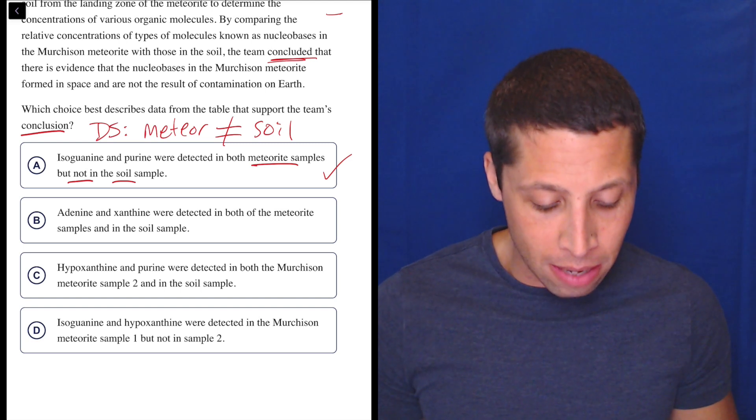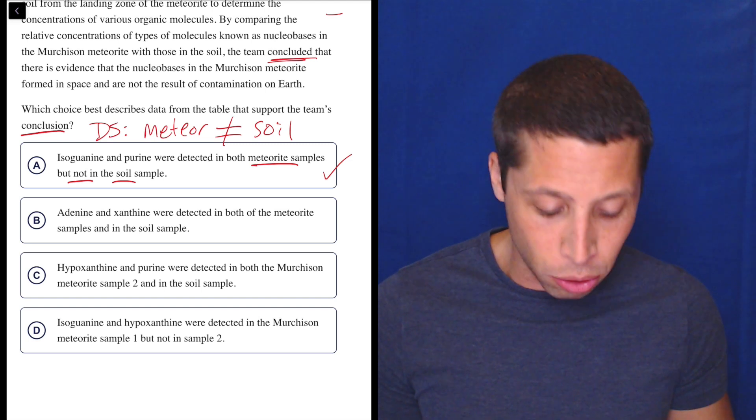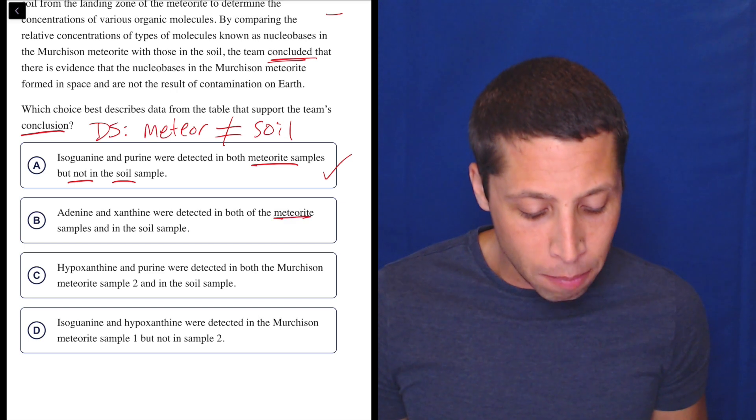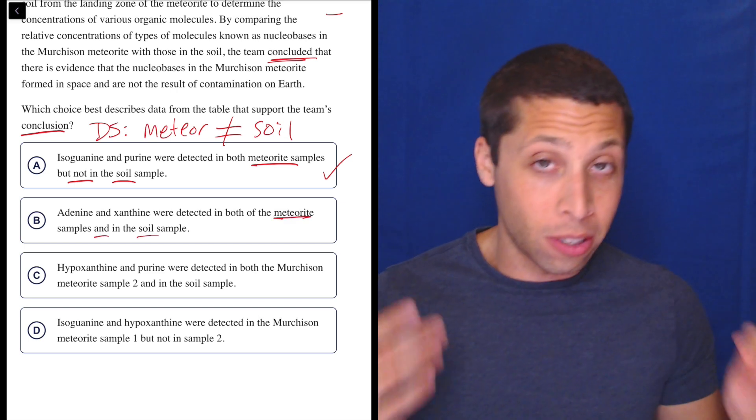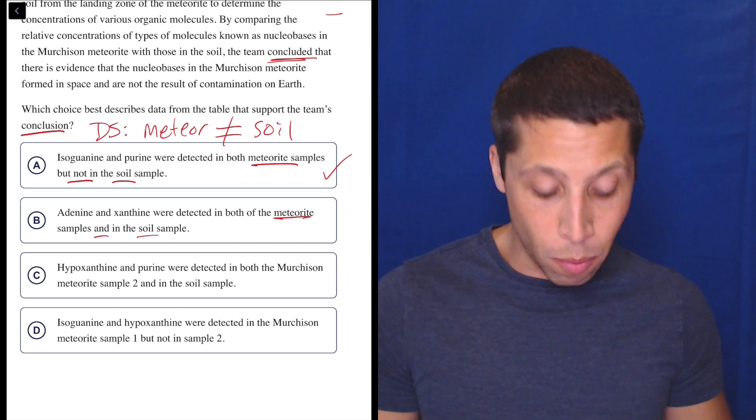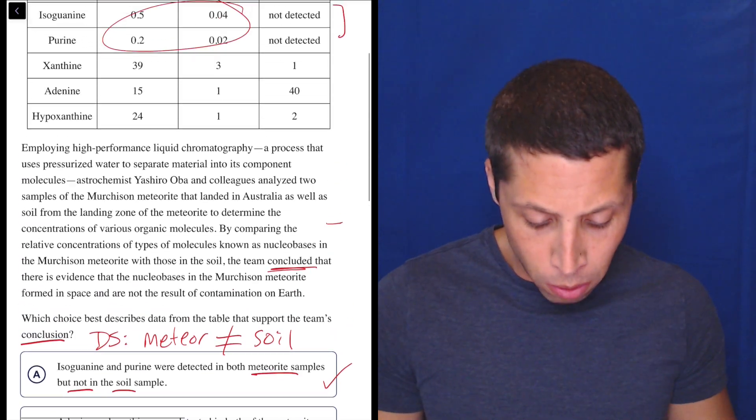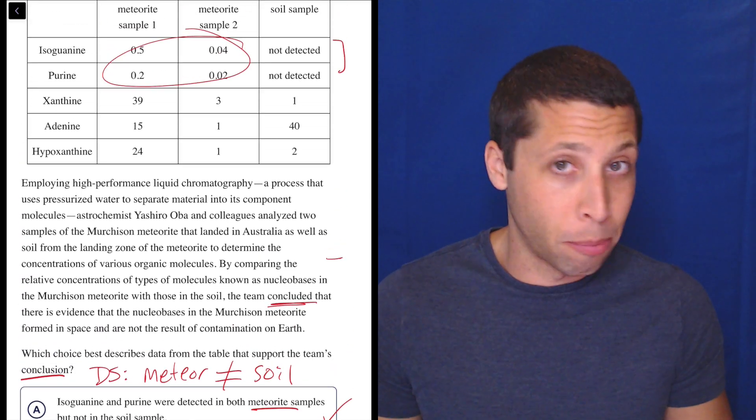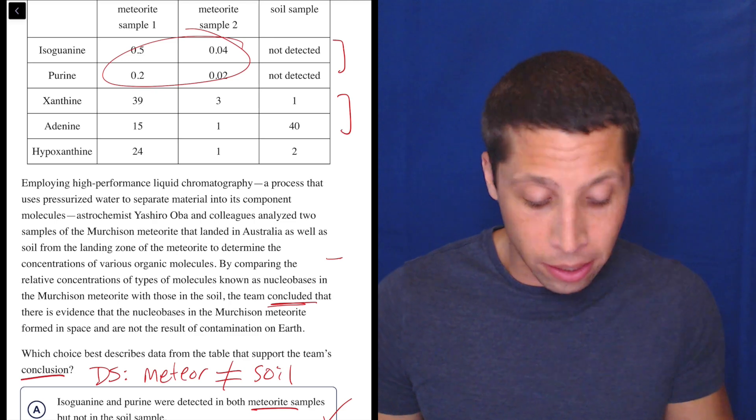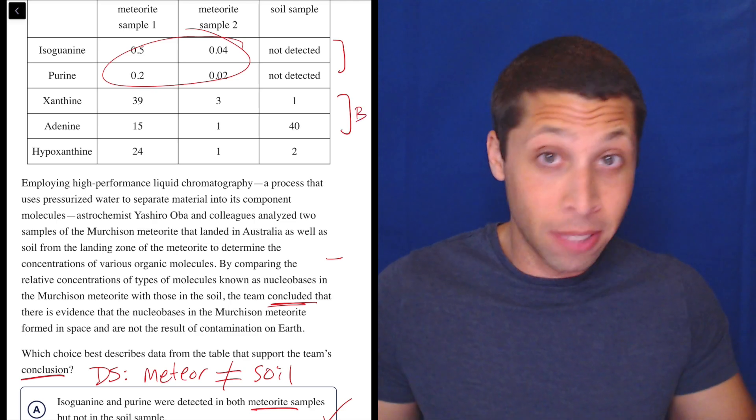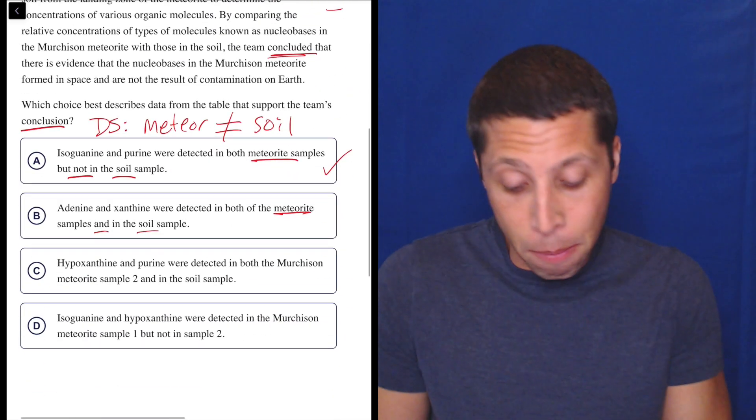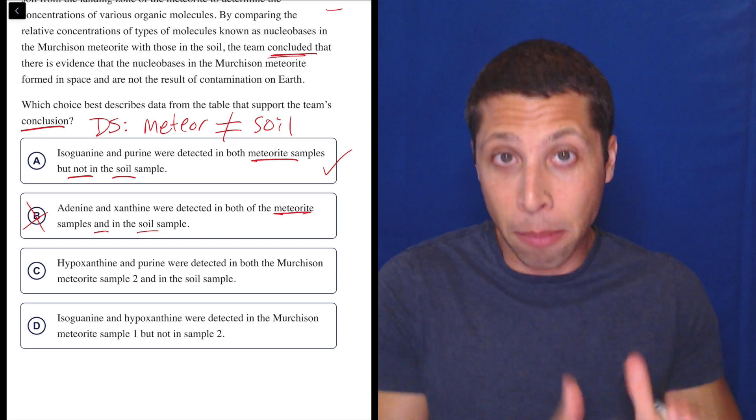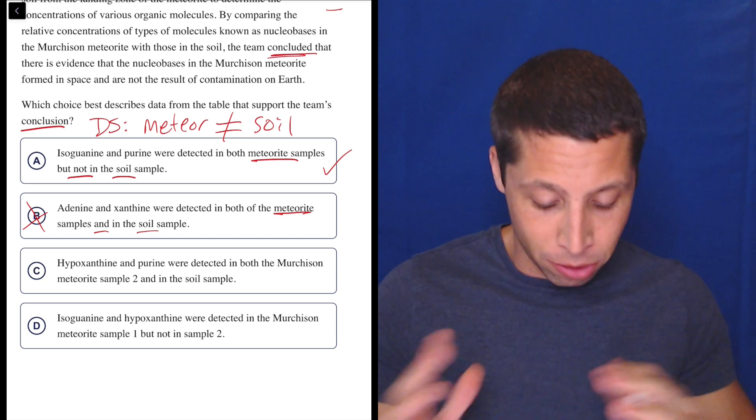B, adenine and xanthine were detected in both of the meteorite samples and in the soil sample. Well, if we're saying the meteorite and the soil are the same, that seems different from what we expected. Now, is that true? Adenine and xanthine are in both? Yeah. There's numbers in all those columns. I don't know what those numbers mean, but if we look here, yeah, that's choice B. Seems like there's numbers there. But because of the summary, the dumb summary, I'm getting rid of this thing. So, gone.